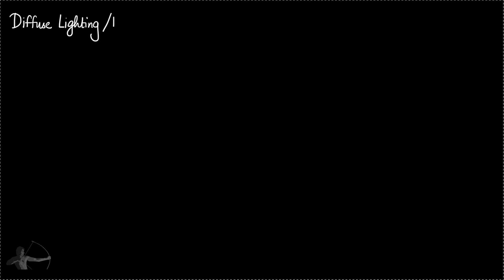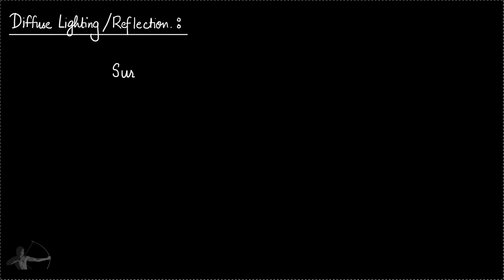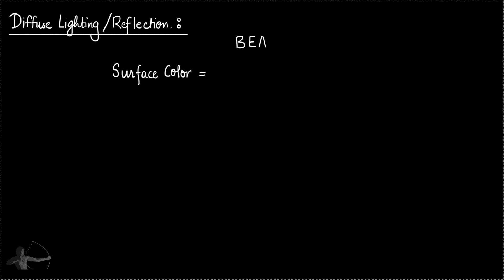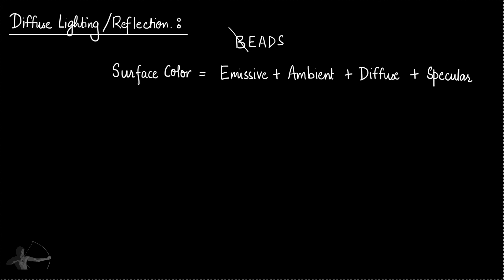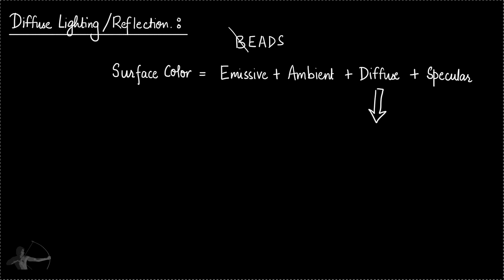Hello everybody. In this chapter we will learn about diffuse lighting or diffuse reflections. In the previous chapter we understood what is the basic lighting model, and according to it, the surface color — which we remembered by the word BEADS — is a summation of emissive, ambient, diffuse, and specular. In this chapter we will understand the diffuse component of the basic lighting model.